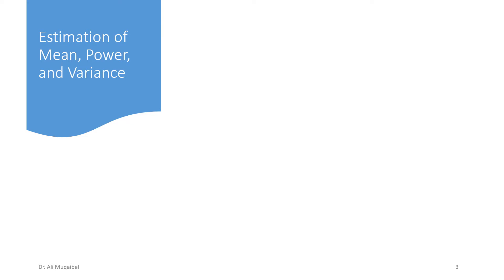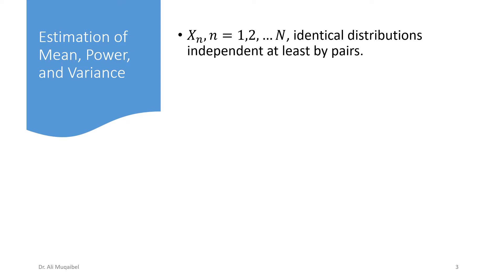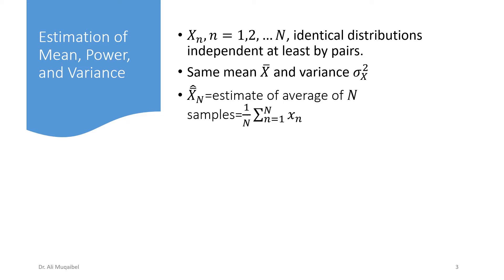If you want to estimate the mean, the power, or variance, we have estimators for each. Our random variable x_n represents identically distributed independent — at least pairwise — random variables. We assume they are i.i.d., at least by pairs. We assume that all of them have the same mean x-bar and the same variance sigma_x squared.